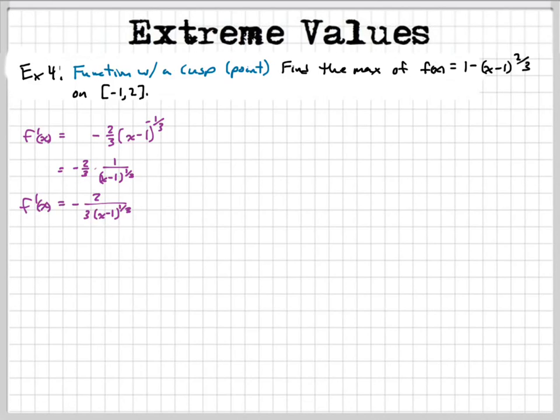So to find our critical points, we set f prime of x equal to 0. To solve it first, we multiply both sides by the denominator, 3 times x minus 1 raised to the 1 third, and that cancels those out. Then you multiply this side by the same thing, which would just be 0. So our result would be 0 equals negative 2, which we know not to be true, which means that there does not exist a c such that f prime of c equals 0 for this function.